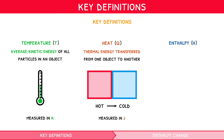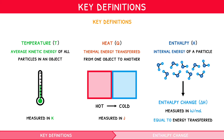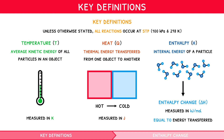Enthalpy, denoted by H, is the internal energy of a particle. However, we commonly focus on enthalpy change, denoted by delta H, measured in kilojoules per mole. It is equal to the quantity of energy transferred during a reaction. It is important to remember that unless otherwise stated, all reactions occur at STP — this is 100 kilopascals and 298 Kelvin.